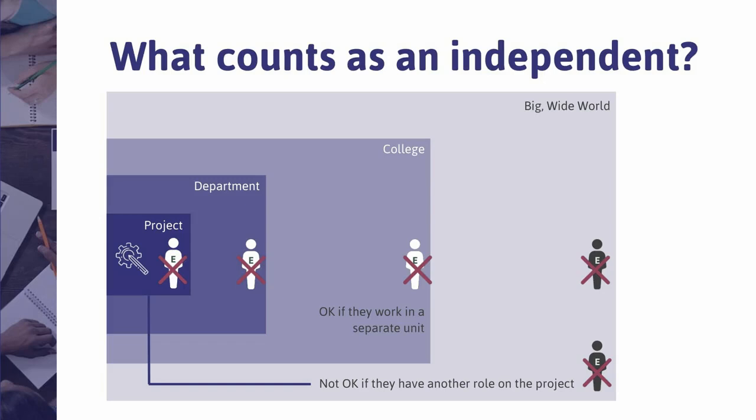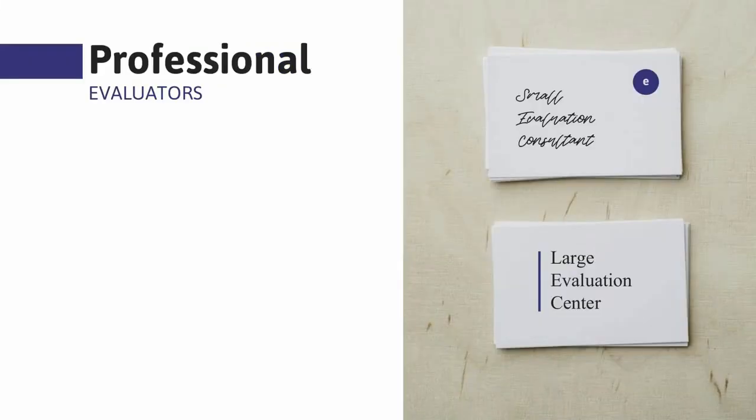NSF asks the evaluator to be independent in order to provide objectivity and validity to the evaluation findings. Do a gut check: can this person objectively evaluate your project? Will there be any incentive for them to sway results one way or another? If you're on the fence, it's better to go with someone outside your institution. An external evaluator has a higher level of independence and will be able to tell you like it is without political ramifications from their administrators.